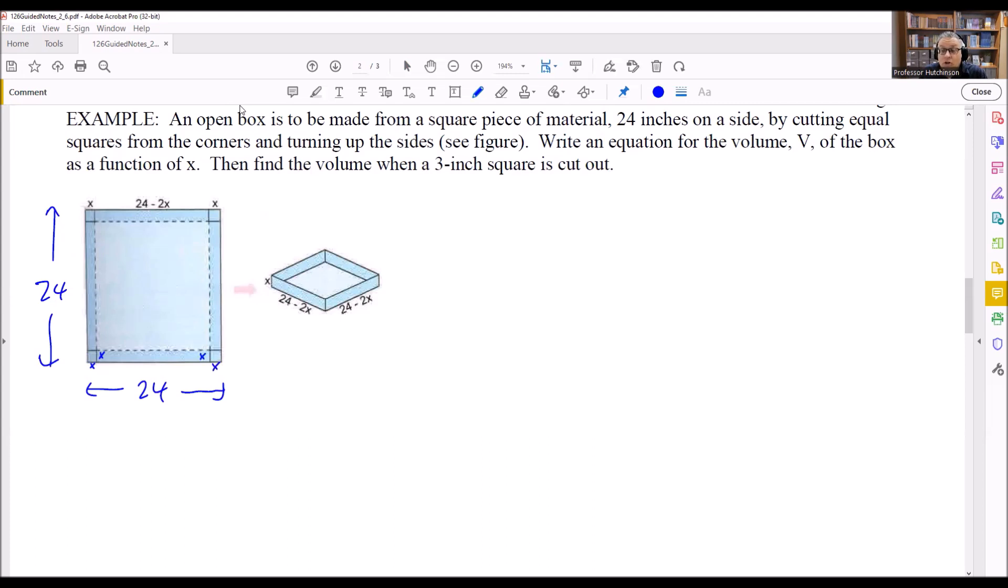So what we want to do is come up with an expression for this dotted line because the box is going to be folded along the dotted line. It's actually folded up to look like this kind of 3D one that we have here. So the way that we're going to express that is we're going to take 24 is all the way across, but then we're going to remove this little x and then that little x from it.